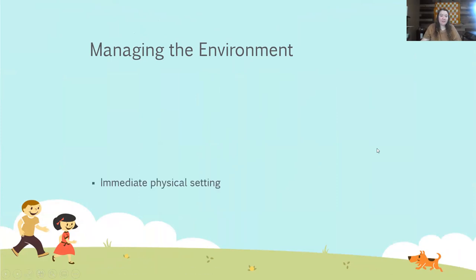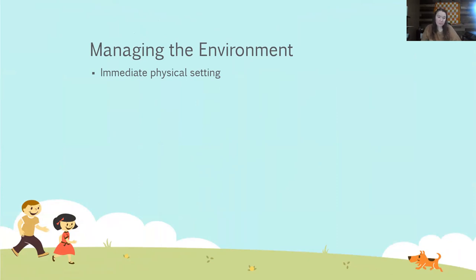Now we're going to talk about managing the environment. Manage the immediate physical setting — in the event that a child is in crisis or displaying behaviors, look for stimulating lights, noise level, chaos, messiness, and ultimately possible weapons. Keep in mind there are a lot of things that can be considered a weapon in a home — a candle on the shelf, a picture frame, a dining room chair, heavy objects in the kitchen, a knife, scissors. If you're able to remove those items or remove the child from that environment, do so to eliminate any sort of physical harm.